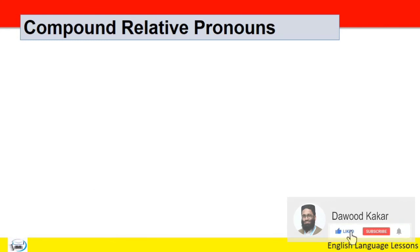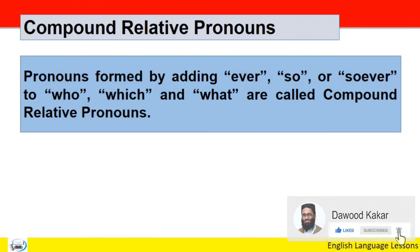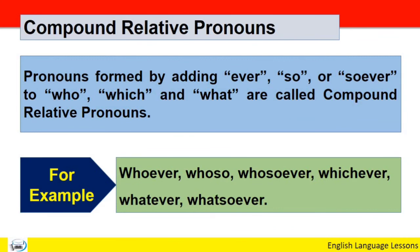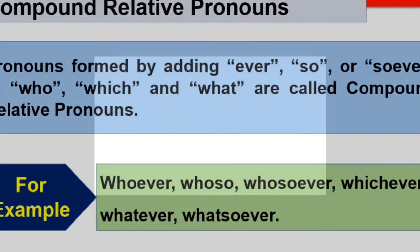Compound relative pronouns — pronouns formed by adding 'ever', 'so', یا 'soever' to who, which, اور what are called compound relative pronouns. اگر ever, so، اور soever کو who, which، اور what کے ساتھ combine کریں تو پھر ان کو compound relative pronouns کہتے ہیں۔ For example: whoever, whosever, whosoever, whichever, whatever, whatsoever۔ یہ words بطور pronoun use ہوتے ہیں اور relative pronoun کا function دیتے ہیں — لیکن ان کو compound relative pronouns اس لئے کہتے ہیں کہ ان کے ساتھ اضافی الفاظ ever, so, soever کے use ہوئے ہیں۔